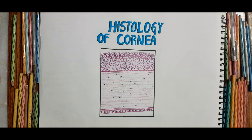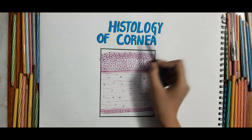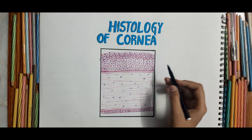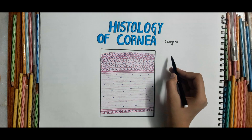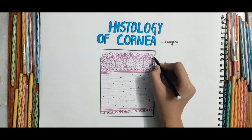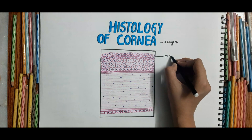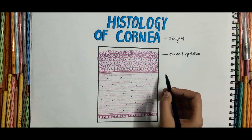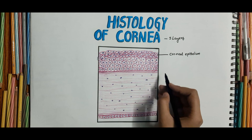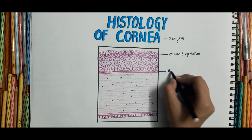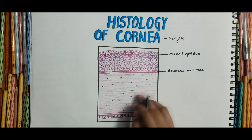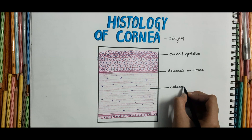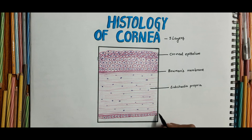Welcome back. In this video, let's learn about the histology of the cornea. The cornea is made up of five layers. The outermost layer is the non-keratinized stratified squamous epithelium — that is the corneal epithelium. The second layer is the anterior limiting lamina or Bowman's membrane. The third layer is the thickest layer of the cornea. The fourth layer is the posterior limiting lamina or Desmet's membrane.